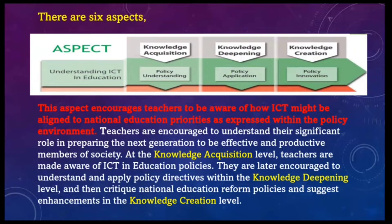There are six aspects in the UNESCO Competency Framework for Teachers. The first aspect is Understanding ICT in Education. In this aspect, the teacher must have Knowledge Acquisition in policy understanding, Knowledge Deepening in policy application, and Knowledge Creation in policy innovation. This aspect encourages teachers to be aware of how ICT might be aligned to national education priorities as expressed within the policy environment.